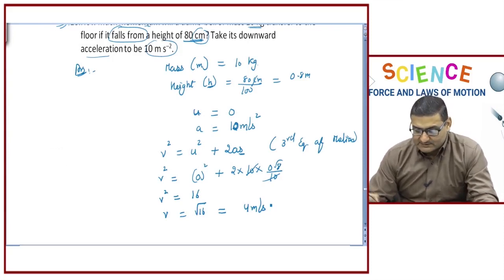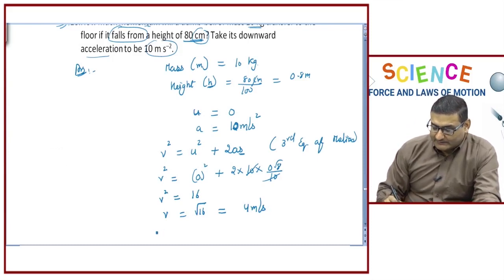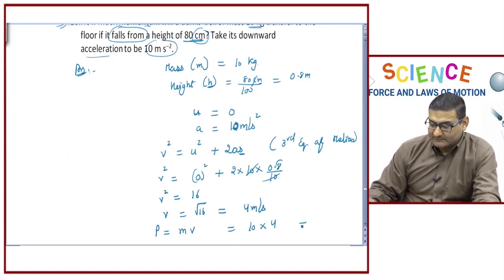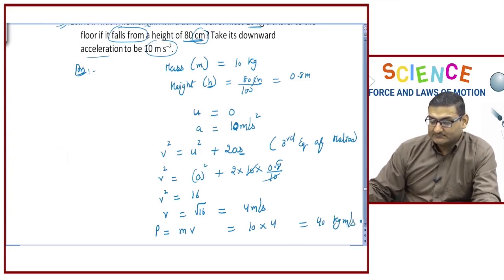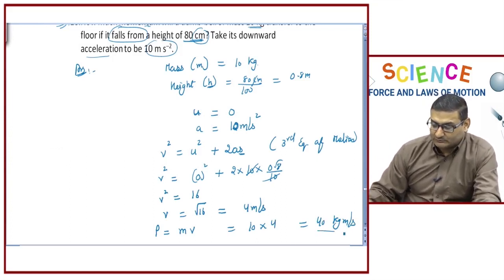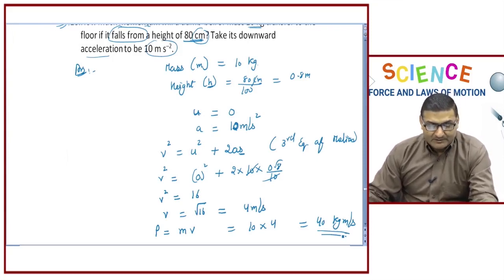The final momentum of the dumbbell just before hitting the floor is p = m × v = 10 × 4 = 40 kilogram meter per second. This is the momentum transferred to the floor.